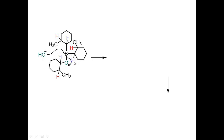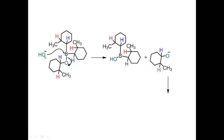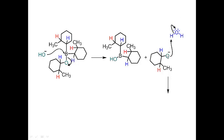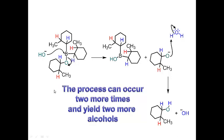OH comes in again and attacks boron, breaking the B-O bond, and one of the alcohols is kicked off as an alkoxide. Water then comes in — the oxygen attacks water and gets protonated — giving the alcohol product plus OH minus. Remember: BAM — boron is anti-Markovnikov. You can rewind this mechanism and watch it as many times as needed. This process can occur two more times because there are two more alkoxides, giving two more alcohols, consistent with the three-to-one alkene-to-BH3 stoichiometry.